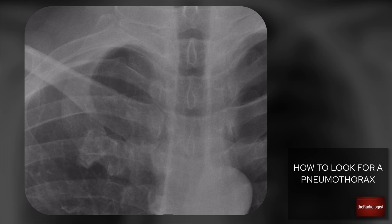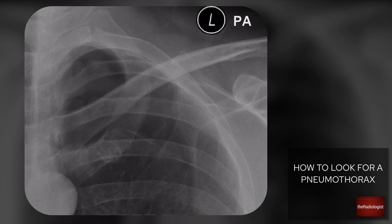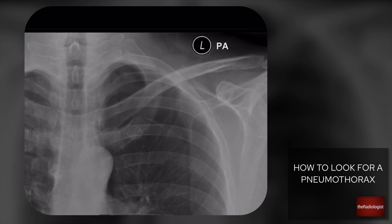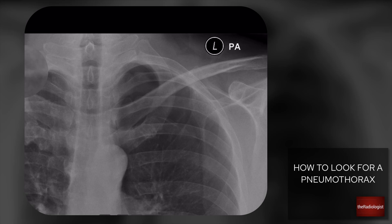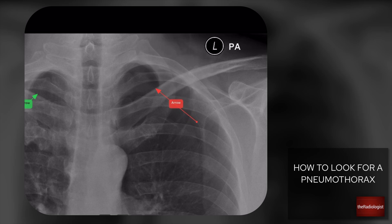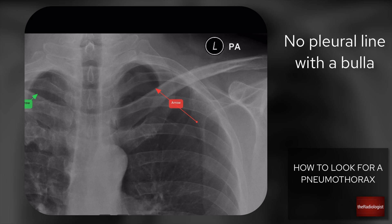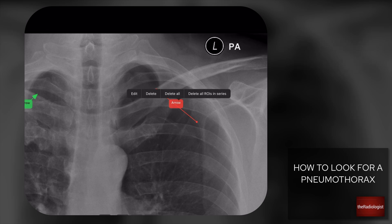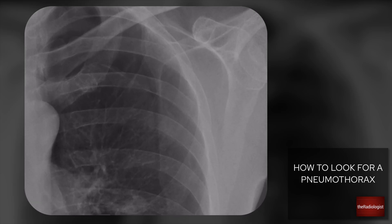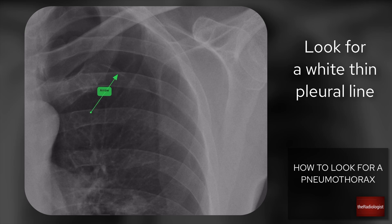Now let's look at the other side. Are there lung markings here? If you're not sure, compare to the other side — I can see lung markings on the right but over here there's nothing, so you have to suspect a pneumothorax. One differential is bullae in the context of emphysema, which can give a similar lucency. However, with emphysema you won't get a pleural line paralleling the chest wall — the bullae appear more circular. Looking a bit lower down, I think we can just about make out a thin white line that you can follow all the way down.